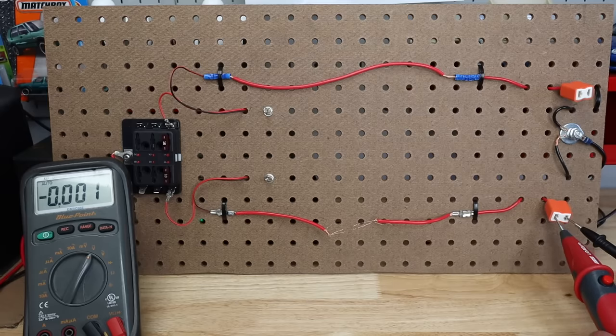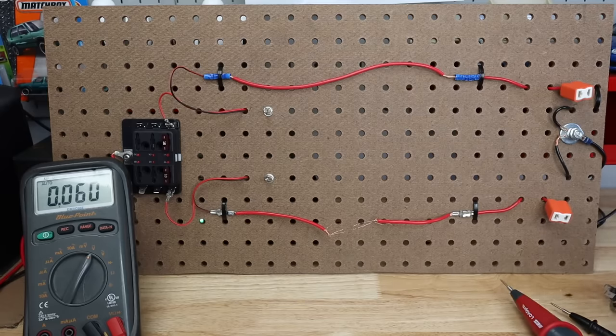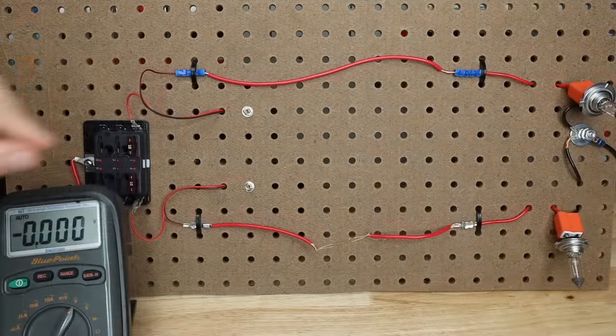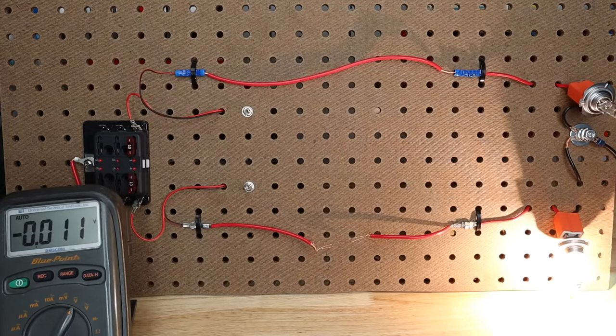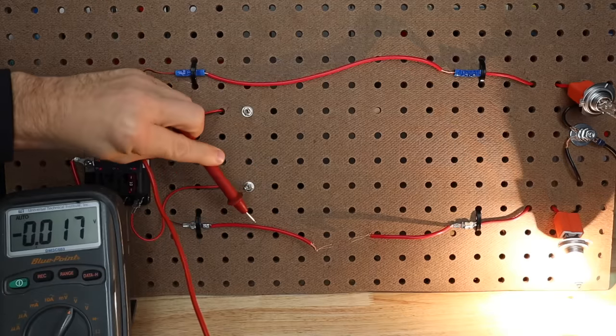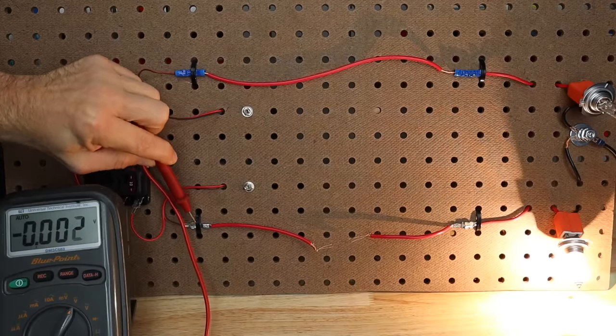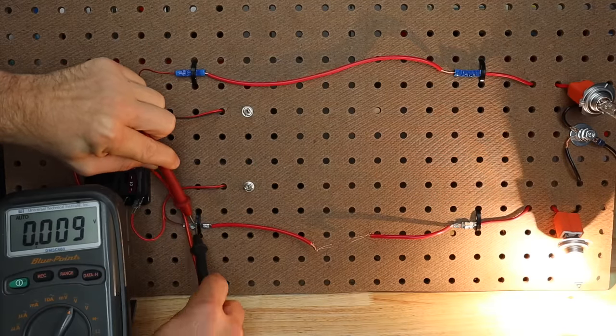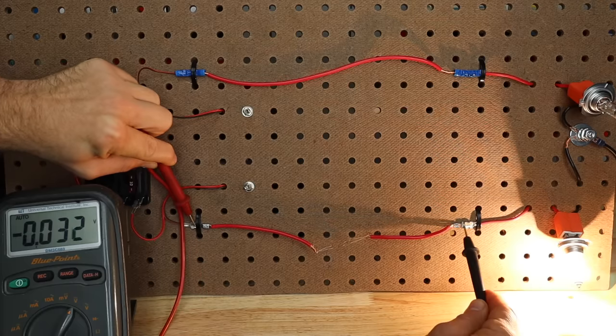So to sum it up, we want to have our load turned on. We're going to take one of our meter leads on one side of the circuit we're trying to test, so this could be connector to connector, and our other lead on the other side.